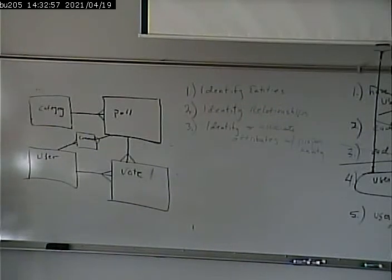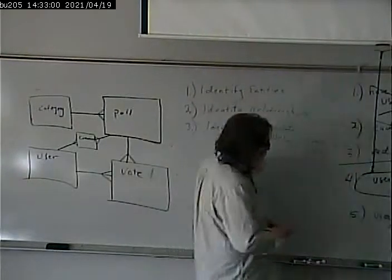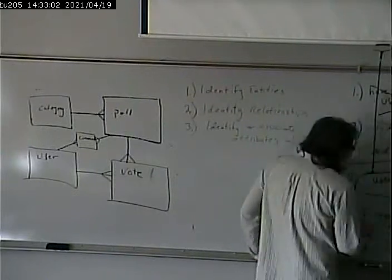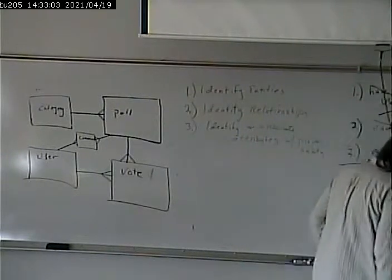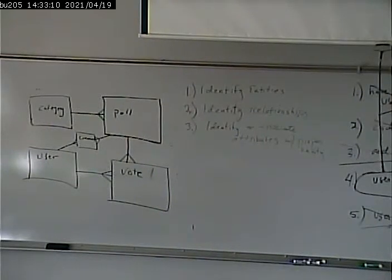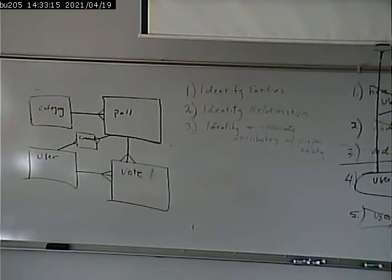Now, here's the one thing that's troublesome in this. We have all the requirements done except for this one. There's nothing on that diagram that tells me that a user can only vote once per poll. How can I implement that?